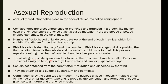The whole group — including sterigmata, metulae, and the tip of each branch — is given the name 'pencil,' which is where Penicillium gets its name. The conidia are blue, green, or yellow in color, and elliptical or oval in shape.